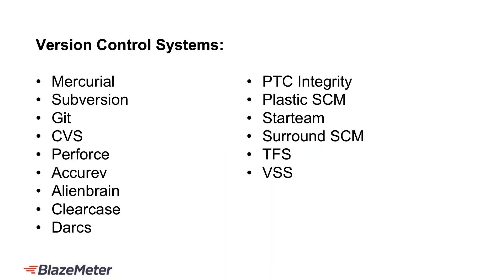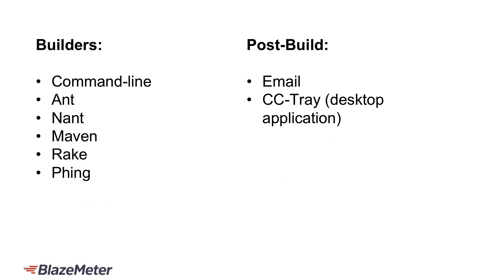CruiseControl is based on Java, so it's cross-platform by design. There are also implementations in .NET and Ruby. The latest release provides the following integrations out of the box. Version control systems include Mercurial, Subversion, CVS, Perforce, AccuRev, AlienBrain, PVCS, PTC Integrity, SmartTeam, Surround SCM, and more. Builders include command line, Ant, NAnt, Maven, Rake, and others. For post-build notifications, you can go with email or CCTray, a desktop application.